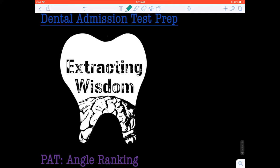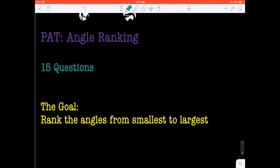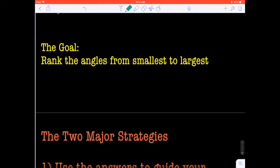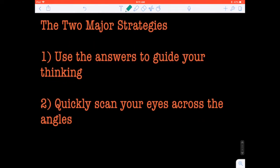So let's get into it and talk about the formatting. The PAT angle ranking section is the third subsection of the PAT following the keyhole section and the top front side section. You're going to have 15 questions, and the overall goal and objective of this section is to rank the angles from smallest to largest in terms of degrees.